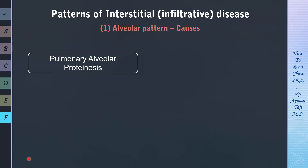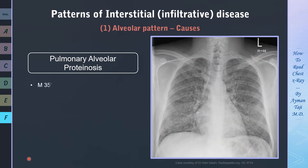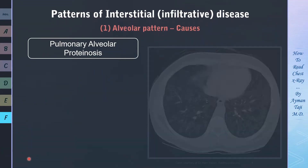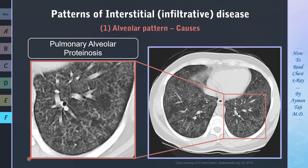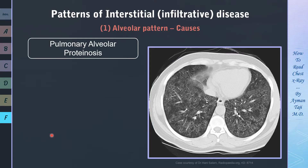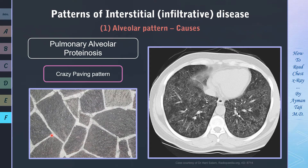A rare but very characteristic cause of diffuse alveolar opacities is pulmonary alveolar proteinosis — a rare lung disorder characterized by abnormal accumulation of surfactant-derived lipoprotein compounds within the alveoli. In this example, a 35-year-old male presents with shortness of breath for 5 days. High-resolution CT shows two main features: smooth thickening of interlobular and intralobular septal lines, and ground glass opacities. The combination of these two features is termed the crazy paving pattern, analogous to irregular-shaped paving stones superimposed on a background of ground glass opacity.